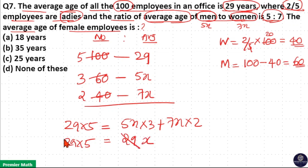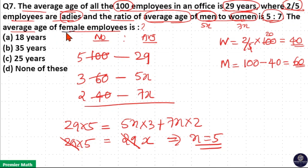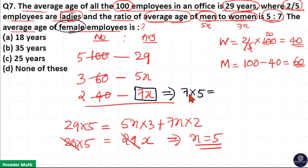29 and 29 cancel, so x equals 5. Now our question asks for the average age of female employees, which is 7x. That means 7 × 5 equals 35. So option B is your answer.